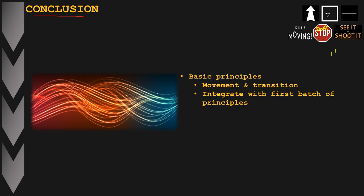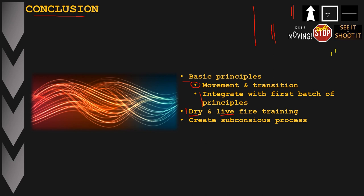In conclusion, we discussed a second batch of main and basic principles in addition to the first batch from 'How to Improve Your Shooting Flow Part 1.' The objective was to focus on movement and transition and to integrate both batches together, as shown in the scenarios. It's important to integrate both batches into your dry and live fire training to increase your bank of information and create subconscious processes you no longer have to consciously think about — so your conscious mind can stay focused on shooting alphas fast, improving your performance on training and especially match stages.